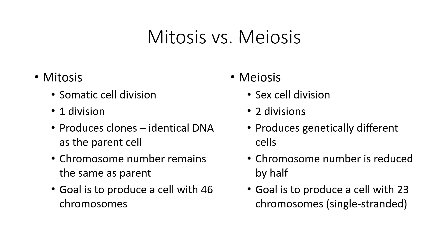You've probably talked about mitosis in Bio 210 or a previous biology course. Mitosis is somatic cell division — this is how cells divide in the body. It is a single division process that produces clones identical to the parent cell, so it's basically cell cloning. The chromosome number remains the same as the parent cell. If you start with 46 chromosomes, your goal is to produce a daughter cell with 46 chromosomes. We're not reducing the chromosome numbers when we do mitosis.